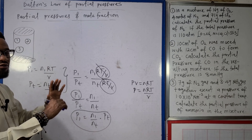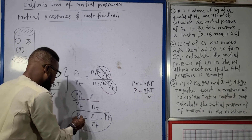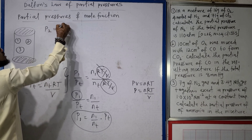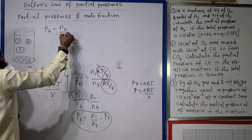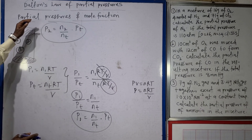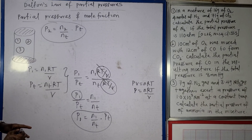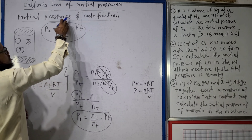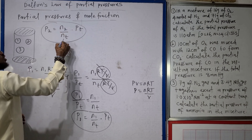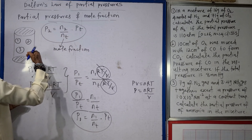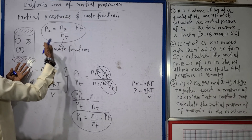So if I know the total pressure, the number of moles of a particular gas, and the total number of moles in the vessel, I can calculate the partial pressure of that gas. For gas 2: P₂ = (n₂/nT) × PT. The ratio n₁/nT or n₂/nT — the number of moles of an individual gas divided by the total number of moles — is called the mole fraction.